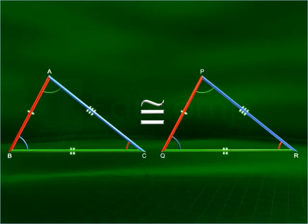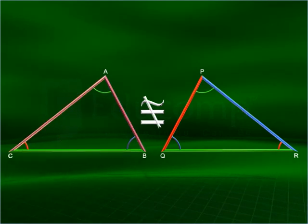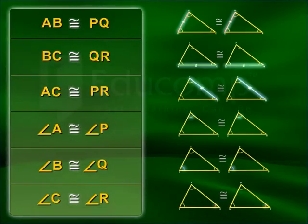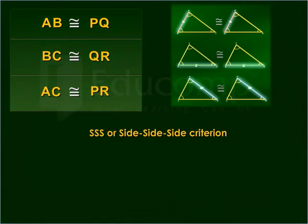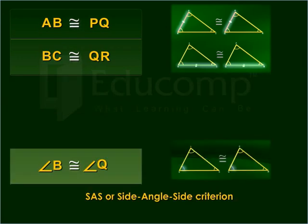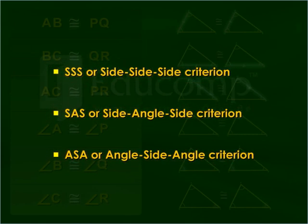You have to be careful when comparing corresponding parts of triangles. Triangle ABC is congruent to triangle PQR, but triangle ACB is not congruent to triangle PQR. Here are six possible conditions to determine the congruence of two triangles. Out of these six conditions, three are sufficient to determine that two triangles are congruent. These are called the criteria for two triangles to be congruent.